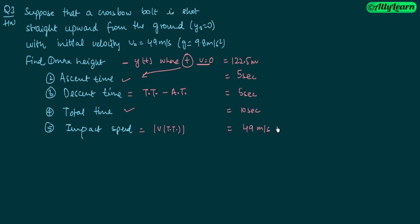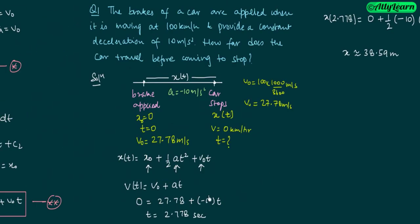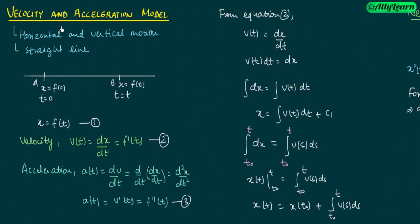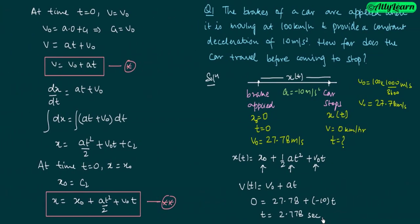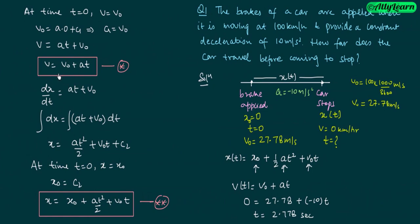In this lecture we saw velocity and acceleration related models - when motion is in a horizontal direction in a straight line, and when motion is in a vertical direction in a straight line. These are basic formulas to remember; the derivation process is simple and you can re-derive them anytime to solve such questions. Thank you for watching.